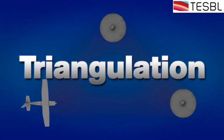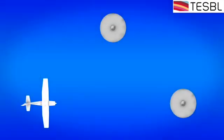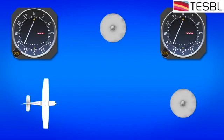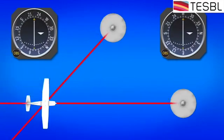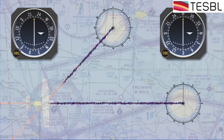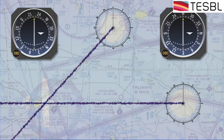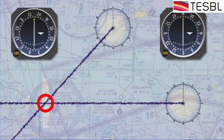Two VORs can accomplish the same thing through a process called triangulation. To triangulate your position, pick two VORs that are near you and tune in their respective frequencies. Simply center both needles with 'from' flags to find the radials. Use a sectional chart to draw the radials out. The two radials should intersect, indicating your current location.